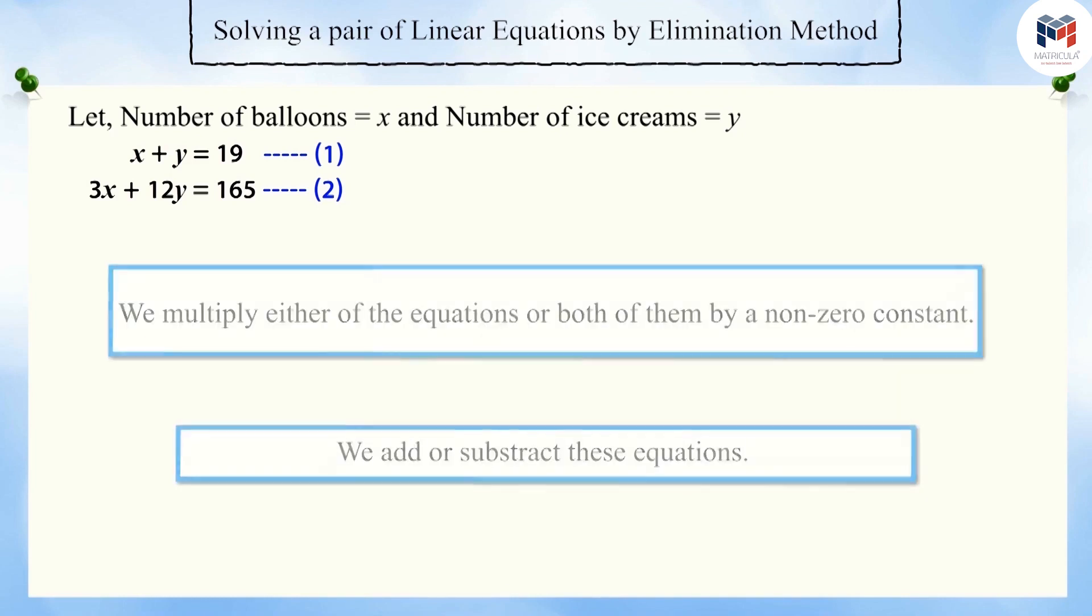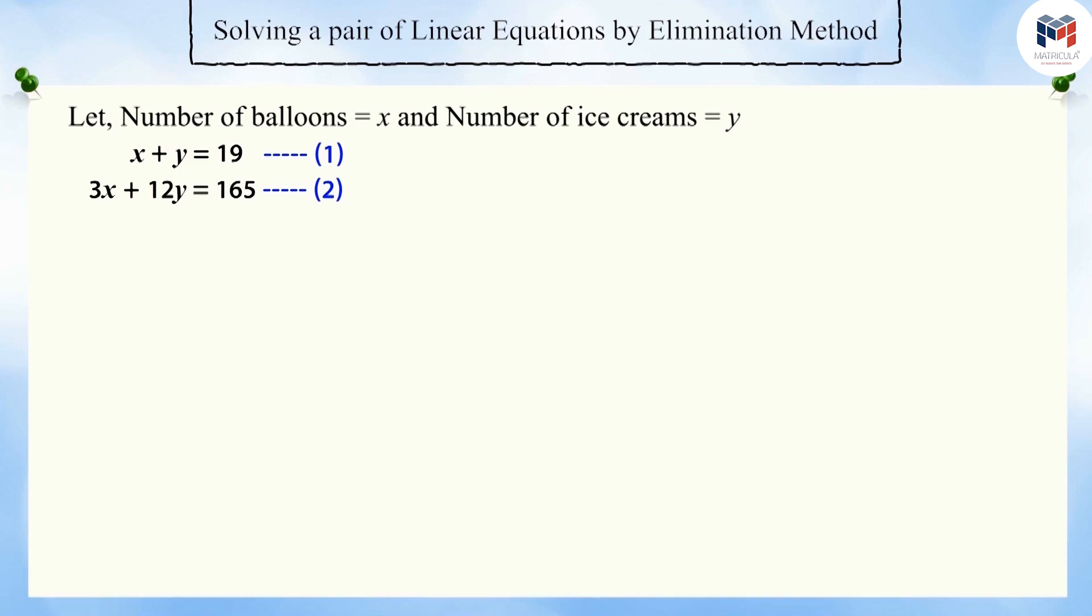You can see that it will be easier to multiply a constant in equation 1 because here, the coefficient is 1 for both the variables. In equation 2, the coefficient of x is 3.